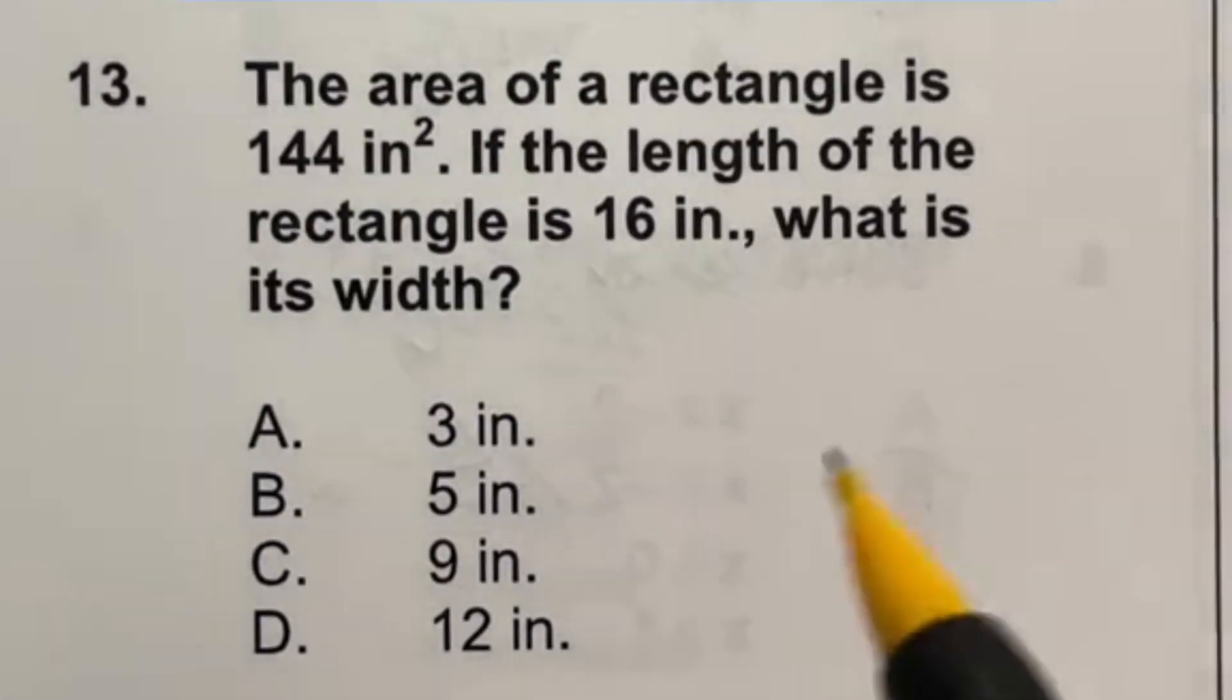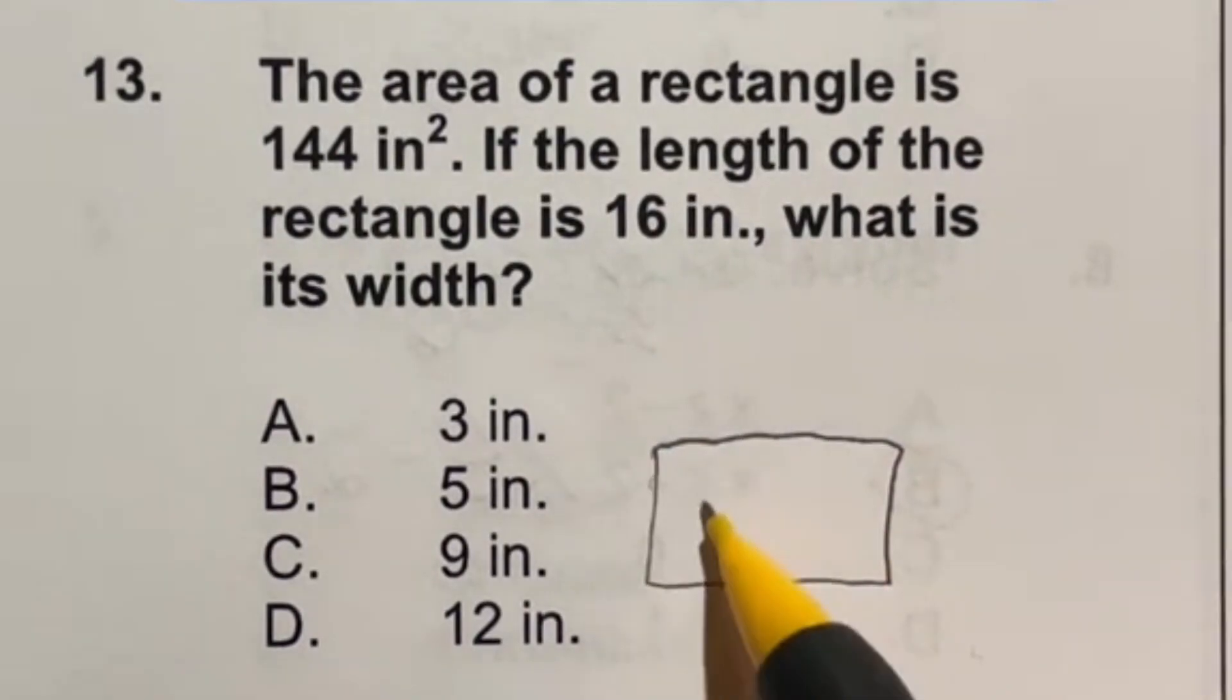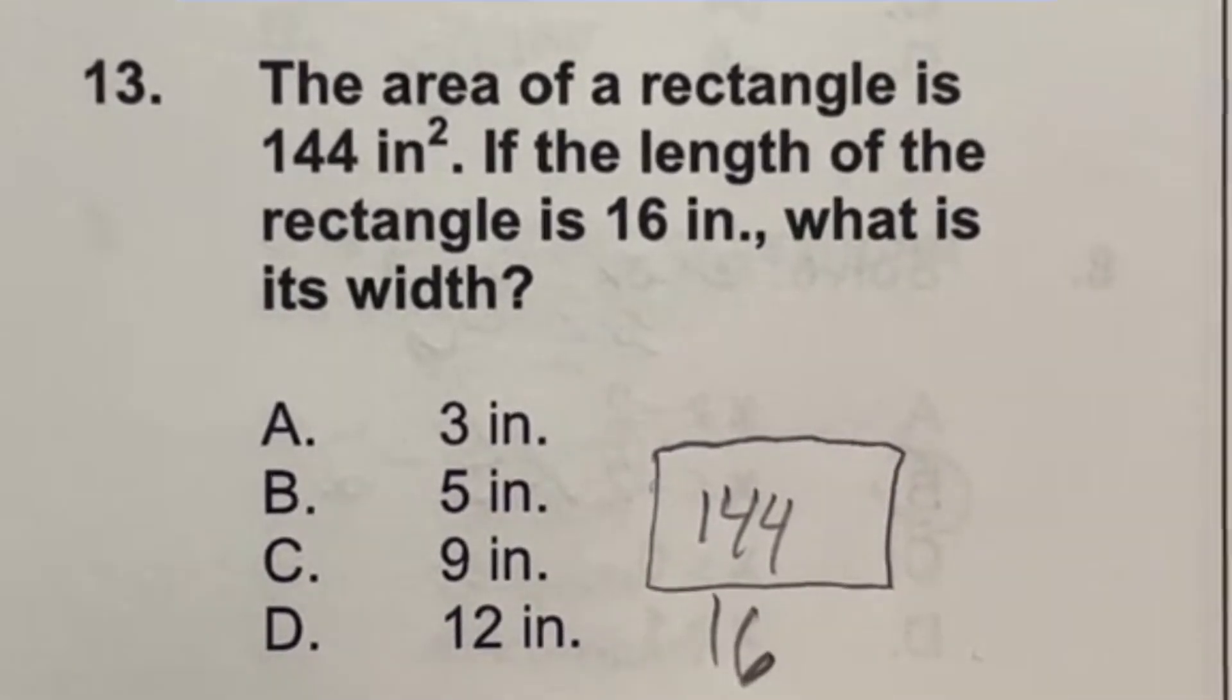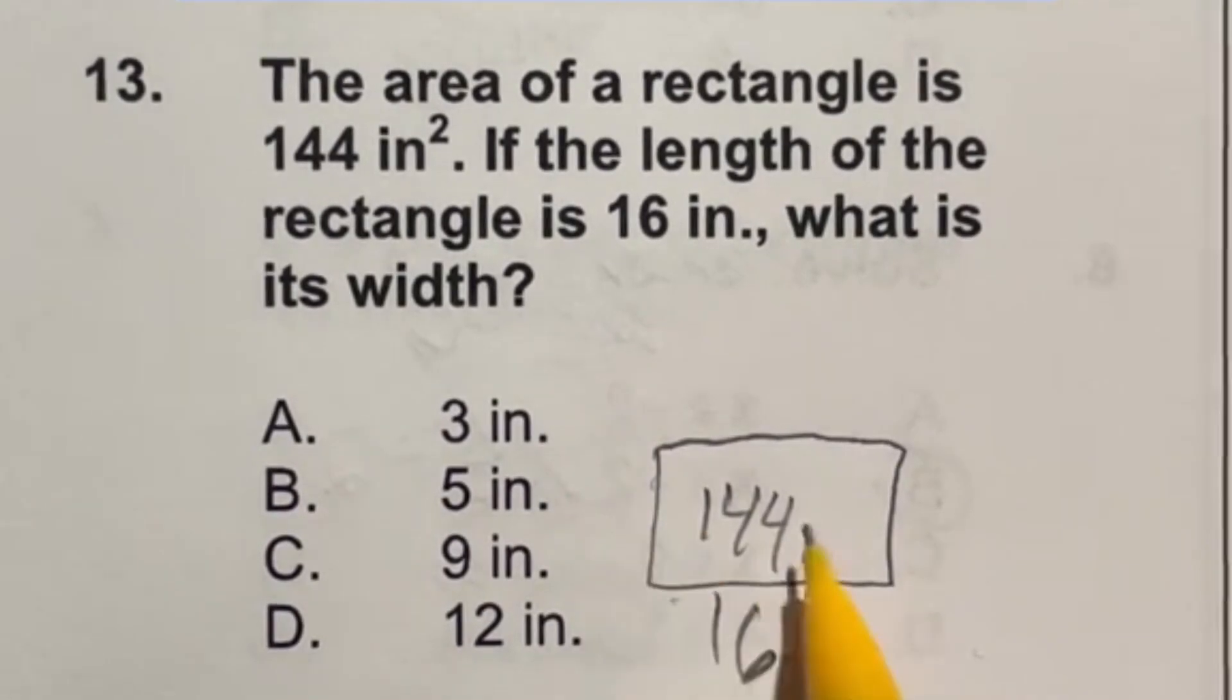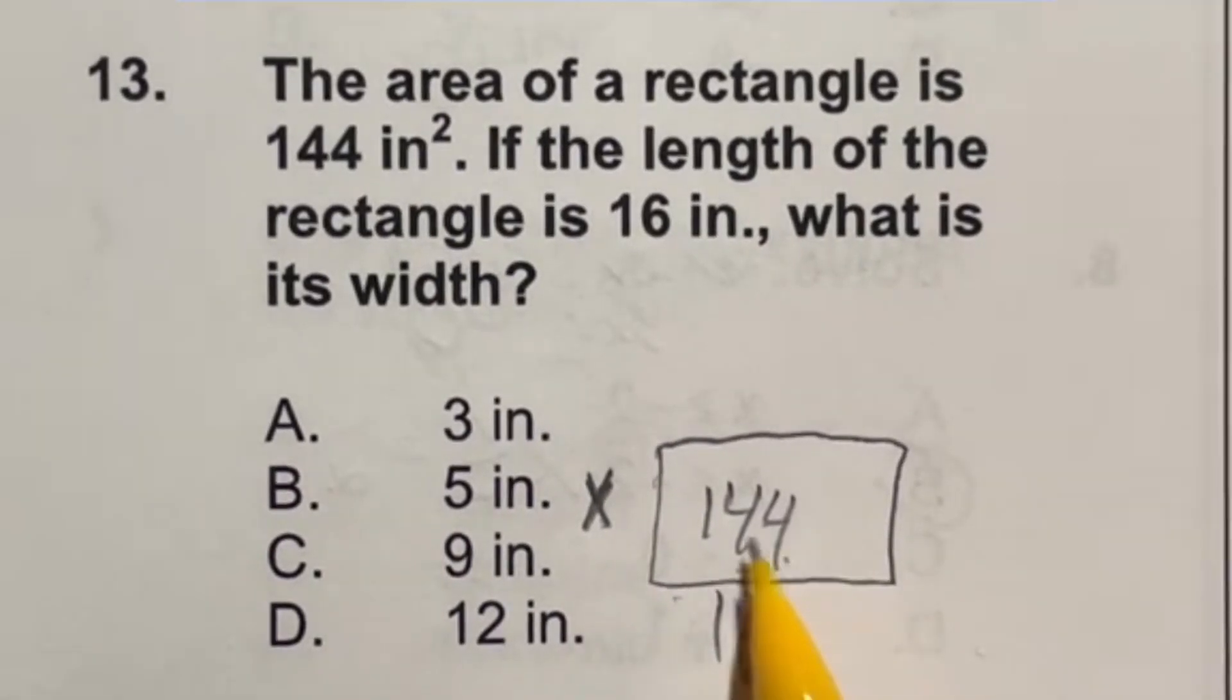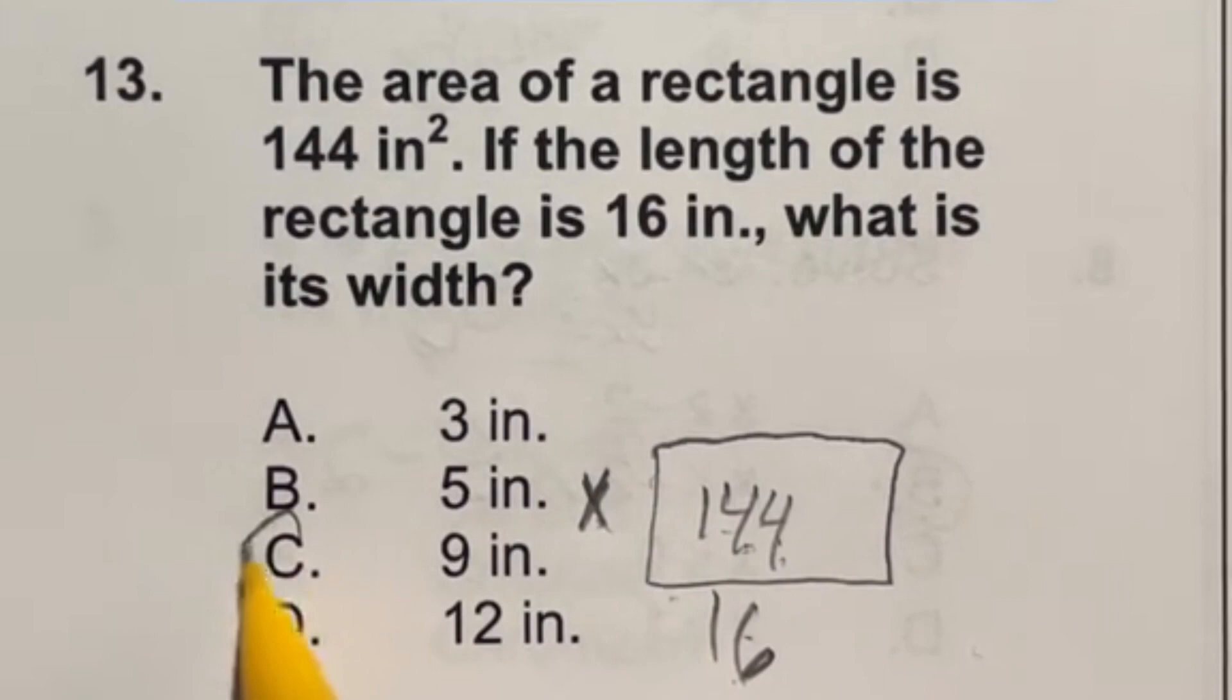So in 13, it says that we have a rectangle, and the area of that rectangle is 144 square inches. If the length of that rectangle is 16, then what's the width? Well, if you're looking at a rectangle, you always do length times width to get this answer. So that means we're looking for the number that when we multiply by 16, it will give me 144. Well, 144 divided by 16, the opposite operation, is just 9. So that means that 16 times 9 would give me this answer, which is option C.